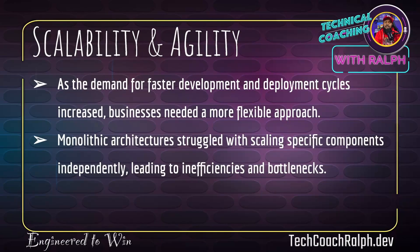For scalability and agility — as demand for faster development and deployment cycles increased, businesses needed a more flexible approach. Monolithic architecture struggled with scaling specific components independently, leading to inefficiencies and bottlenecks. For example, if your database can handle a bunch of requests but your backend can't, and you want to scale out the backend with more servers, you'd have to do that for the entire application instead of just the backend independently.